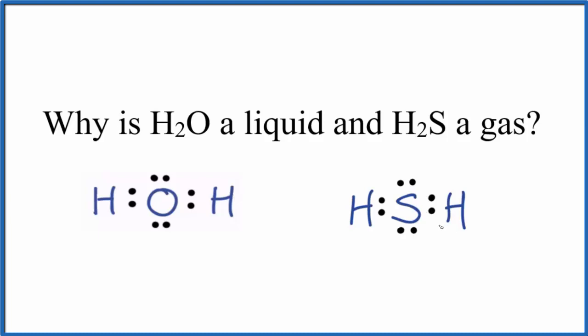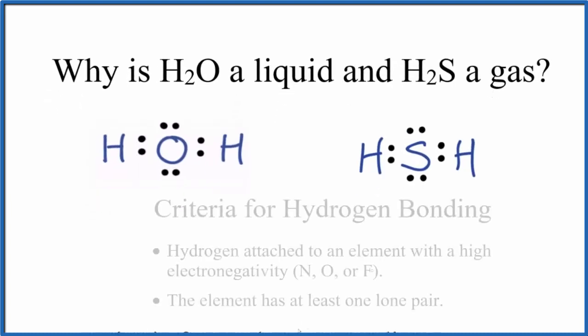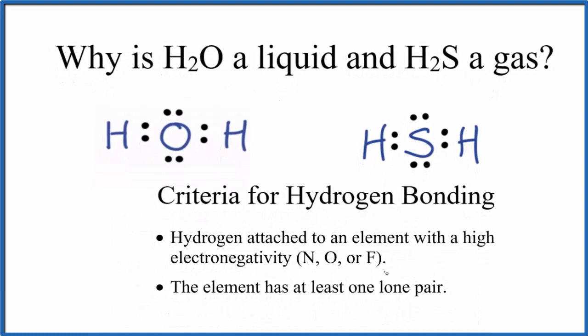H2S, that'll be a gas. The reason is hydrogen bonding. Water undergoes hydrogen bonding. So here's the criteria for hydrogen bonding. We need to have hydrogen atoms and we need to have an element that's very electronegative. Nitrogen, oxygen and fluorine, these are the elements that'll undergo hydrogen bonding.